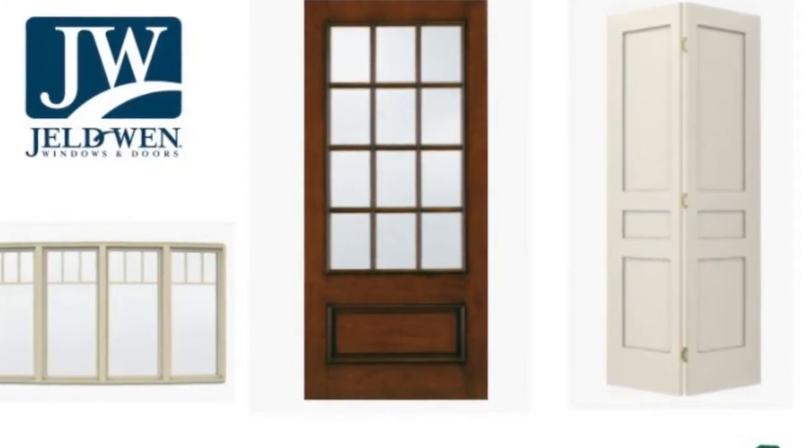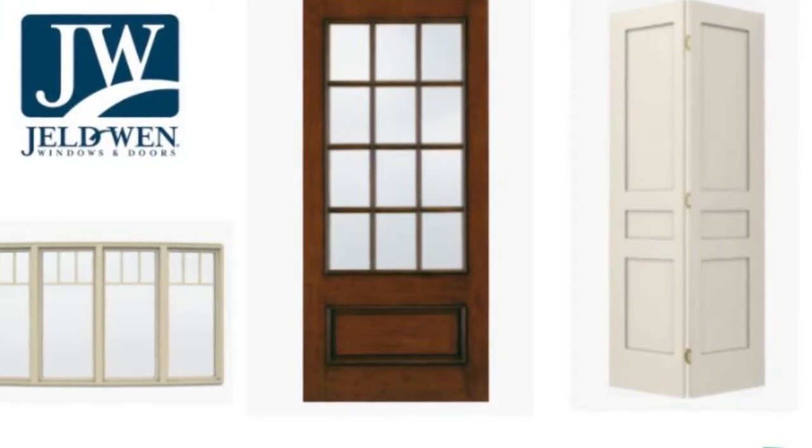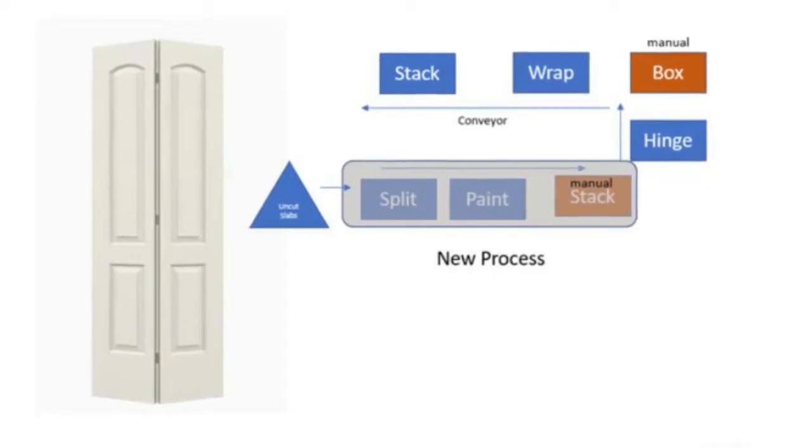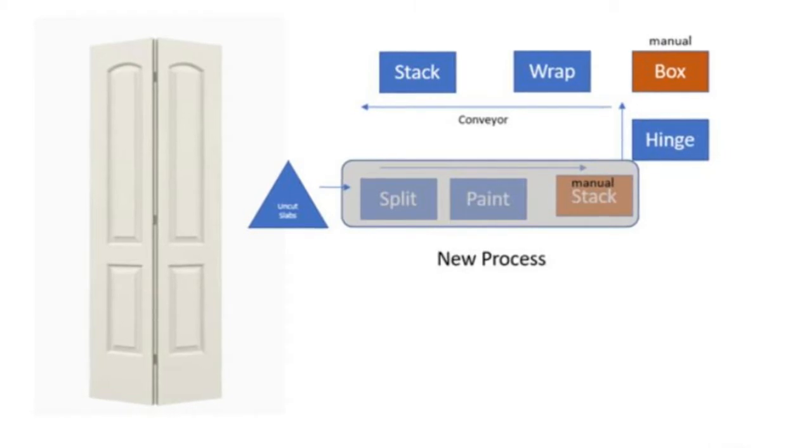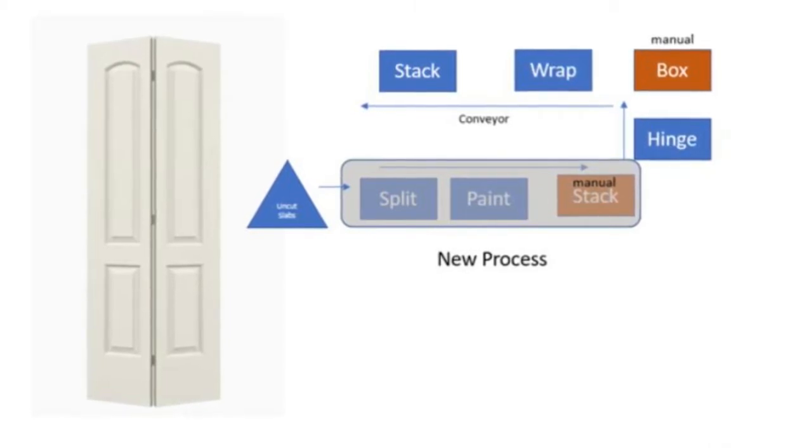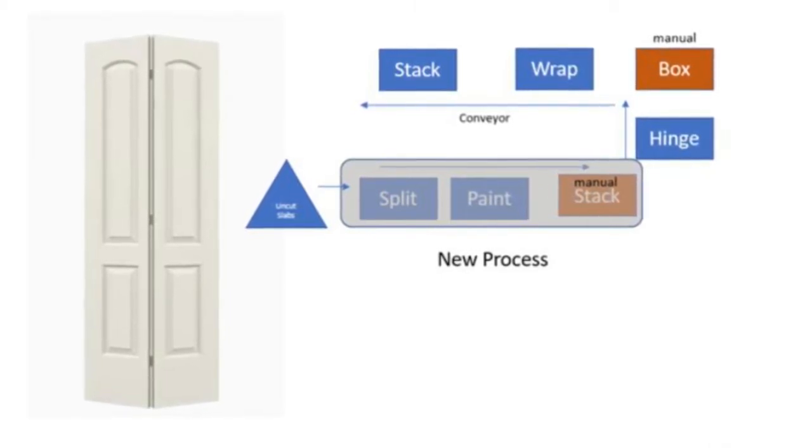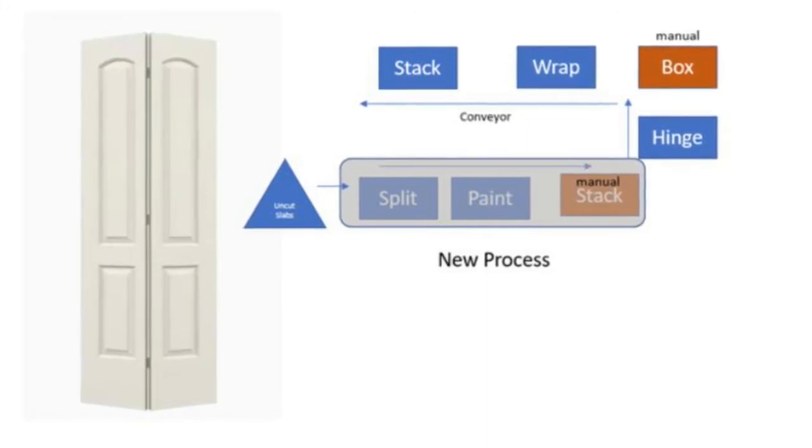This style of door is commonly used for closets in residential homes. In the Jeldwen manufacturing facility in Atlanta, Georgia, the process of cutting the bifold doors was previously performed in a different location within the plant than the processes of hinging, boxing, wrapping, and palletizing.